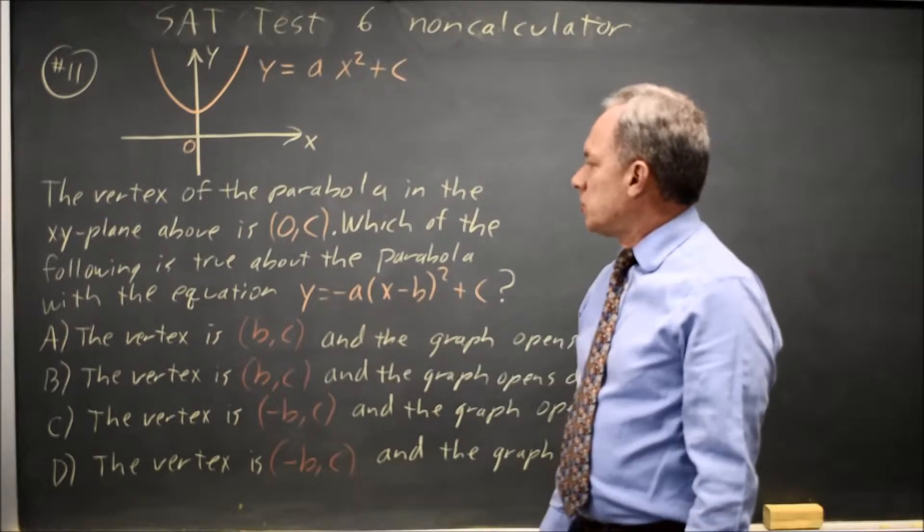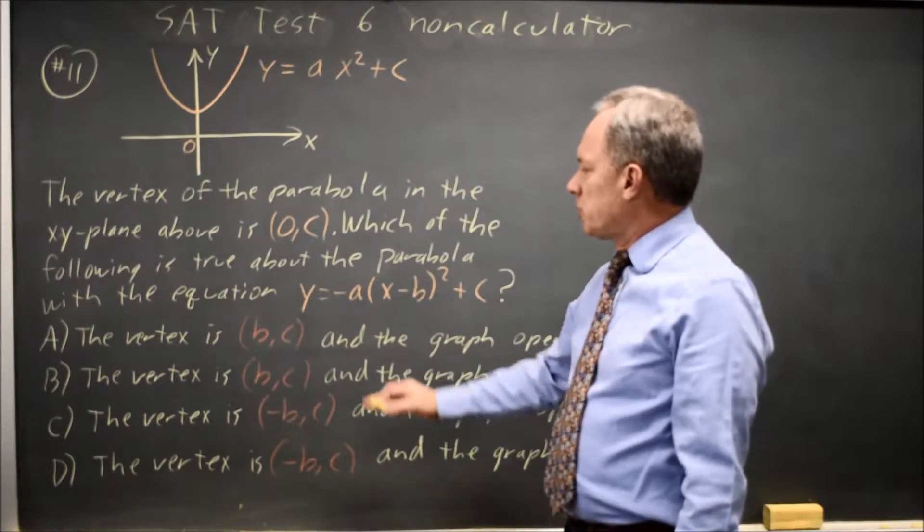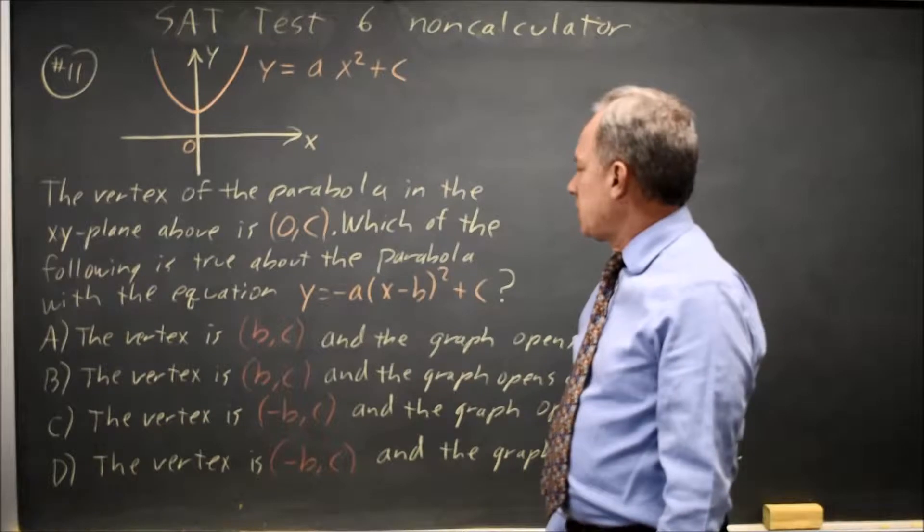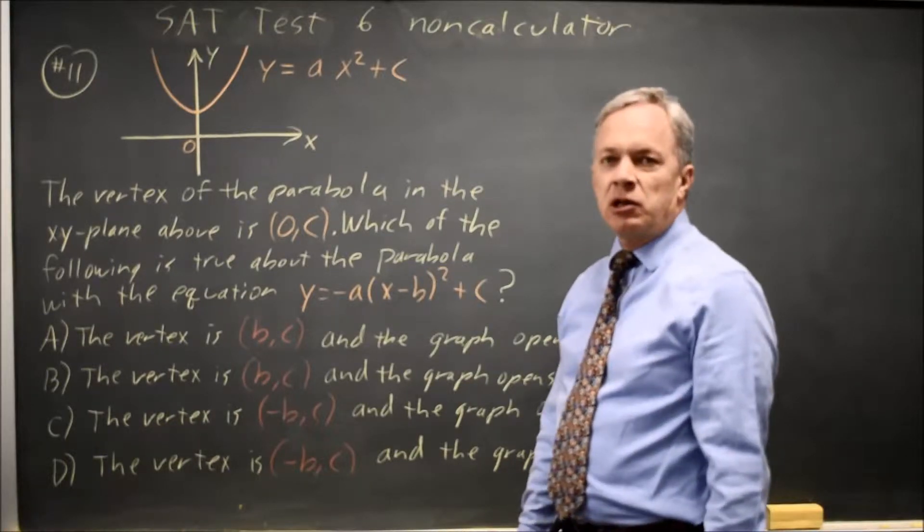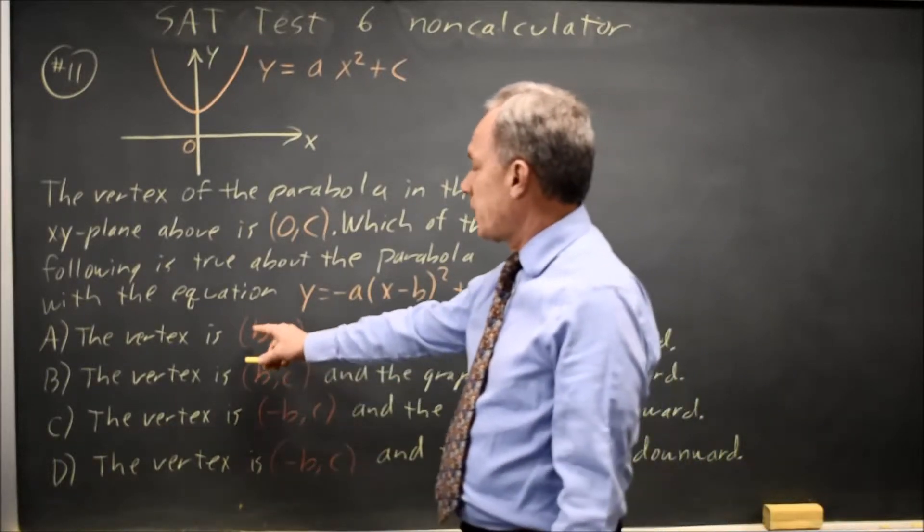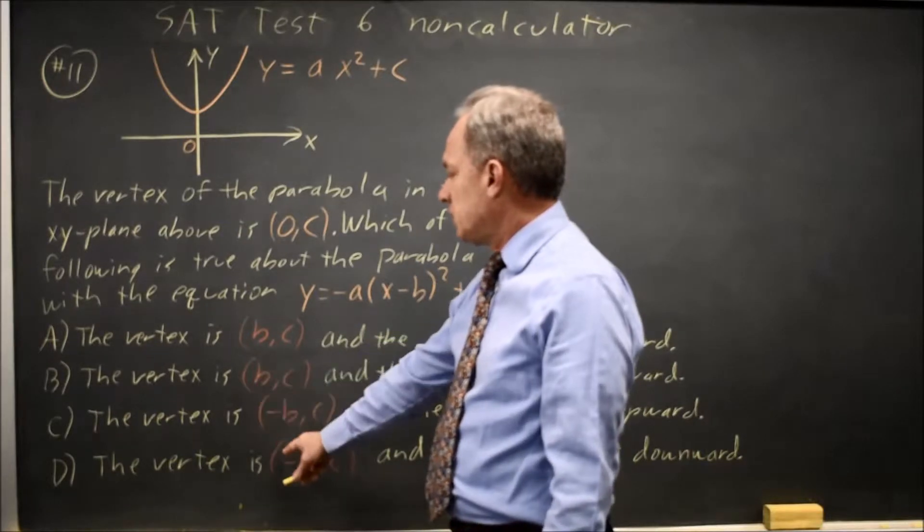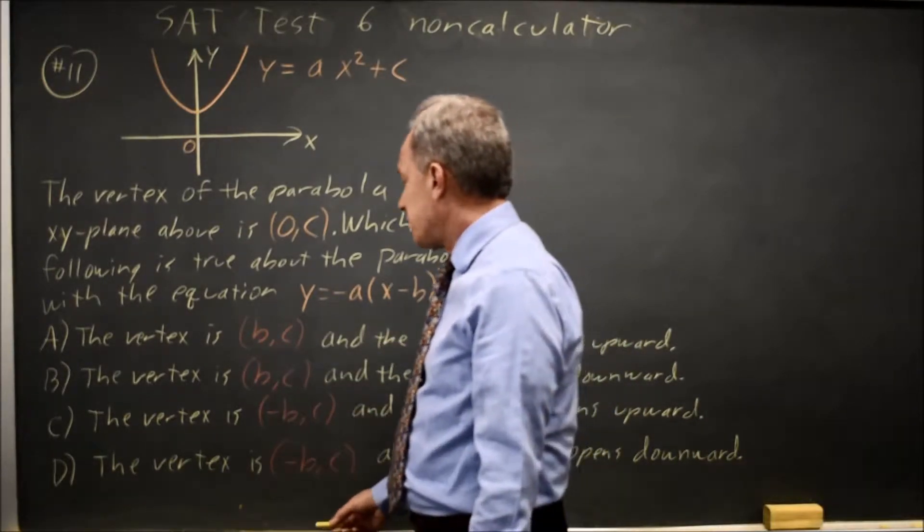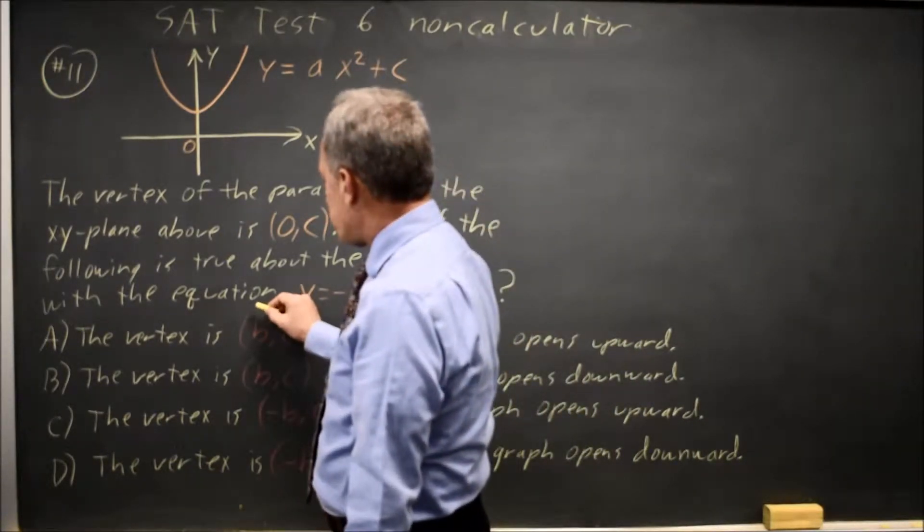which is true about the parabola with a new equation, y equals negative a(x minus b) squared plus c. If you look at the answer choices, choices a and b have vertex (b, c), choices c and d have vertex (negative b, negative c). So they're asking,